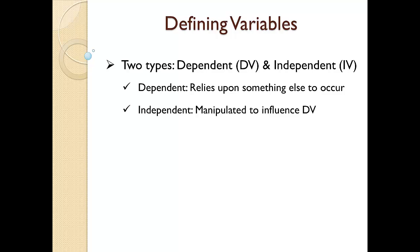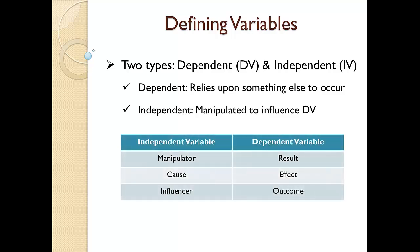That's one way to look at these two types of variables, but let me offer some other ways to distinguish the differences between the two. I already mentioned the manipulator-result relationship between independent and dependent variables. Other ways of viewing this relationship include viewing the independent variable as the cause and the dependent variable as the effect, or the independent variable being the influencer and the dependent variable being the outcome.